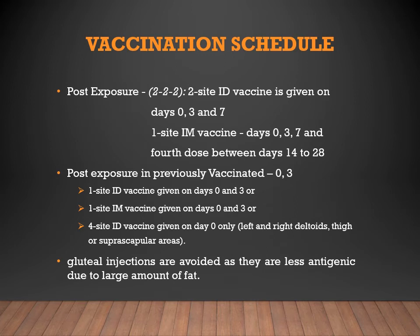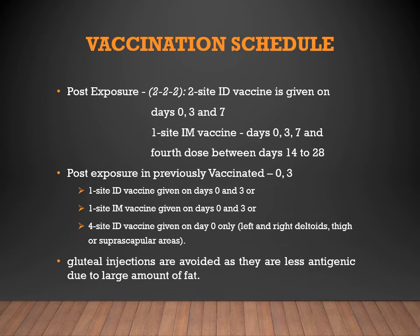For post-exposure vaccination schedule via the intradermal route, the vaccine is given at two sites on days 0, 3, and 7. Day zero refers to the day vaccination is started, not necessarily the day of the bite. For intramuscular injection, one site is used on days 0, 3, and 7, with a fourth dose given between days 14 and 28. So four doses total are given post-exposure.